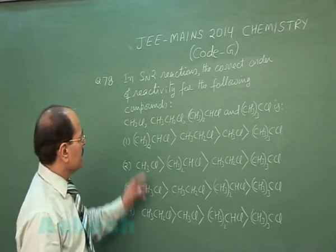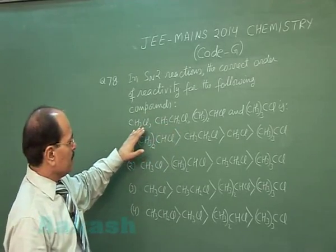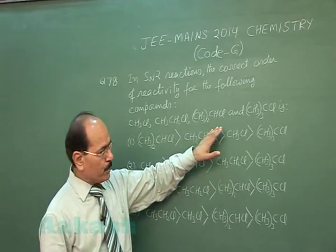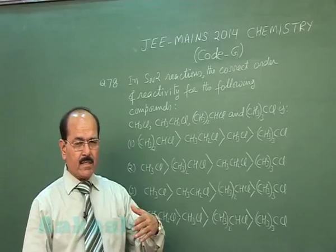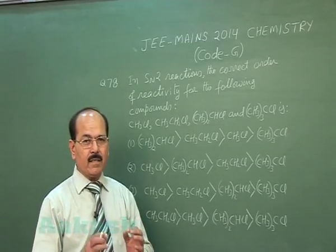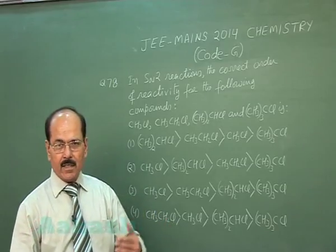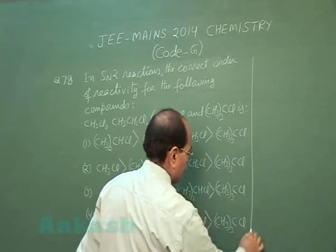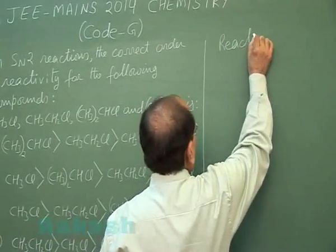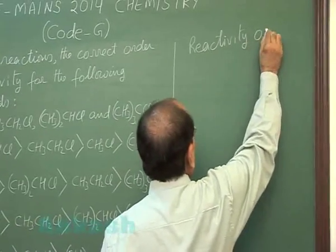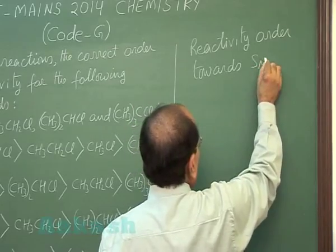Question number 78 says: in SN2 reactions, the correct order of reactivity for the following compounds — methyl chloride, ethyl chloride, isopropyl chloride, and tertiary butyl chloride — is? The reactivity of alkyl halides towards SN2 reaction depends on the steric hindrance at the attacking center. As the steric hindrance increases, the reactivity decreases.